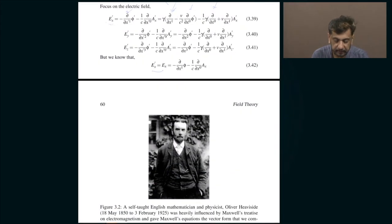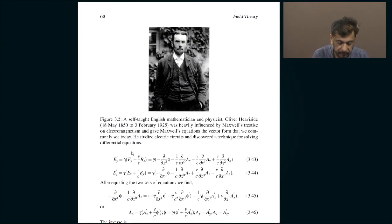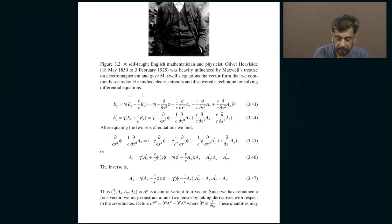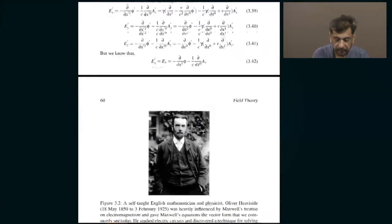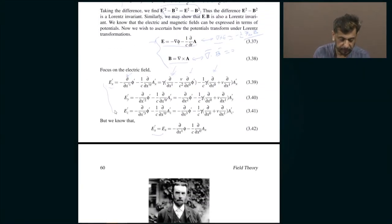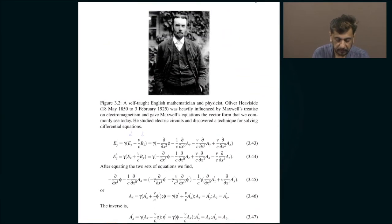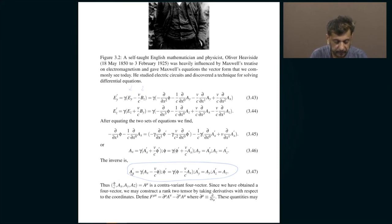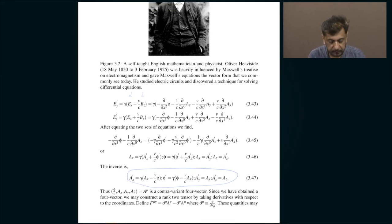When expressed in terms of the potentials, you write down the gradients and time derivatives in terms of their Lorentz-transformed versions. You know that the x-component of the electric field does not transform at all, but the y-component transforms in a peculiar way — it gets mixed up with the z-component of the magnetic field. When you do all that and insert it into the transformed electric field expressed in terms of the potentials, you successfully prove the transformation for both the forward and inverse transforms.